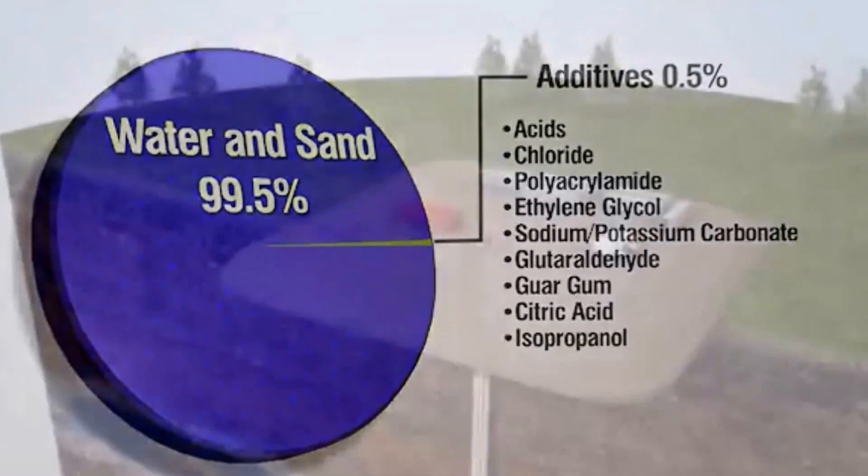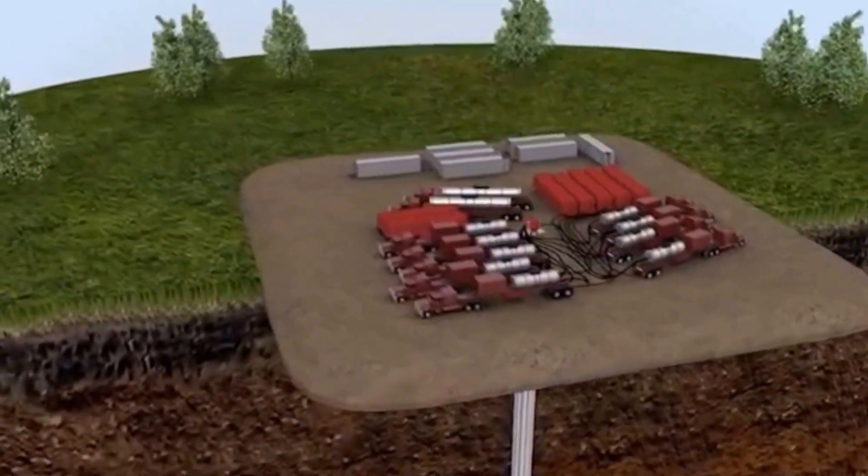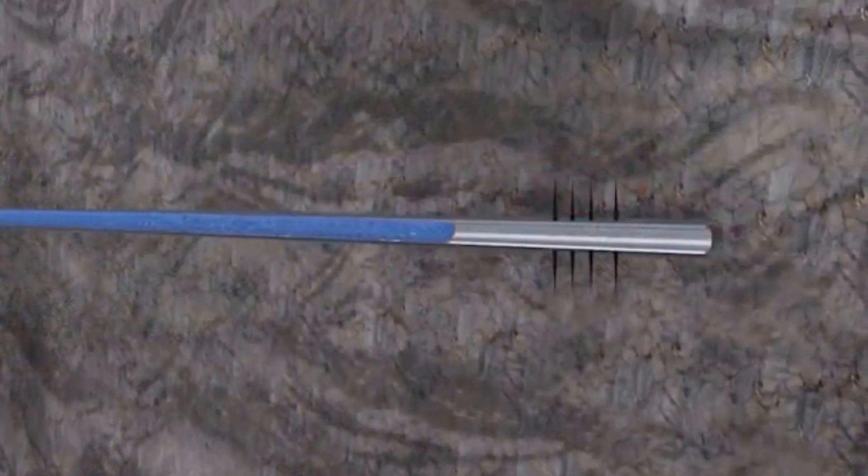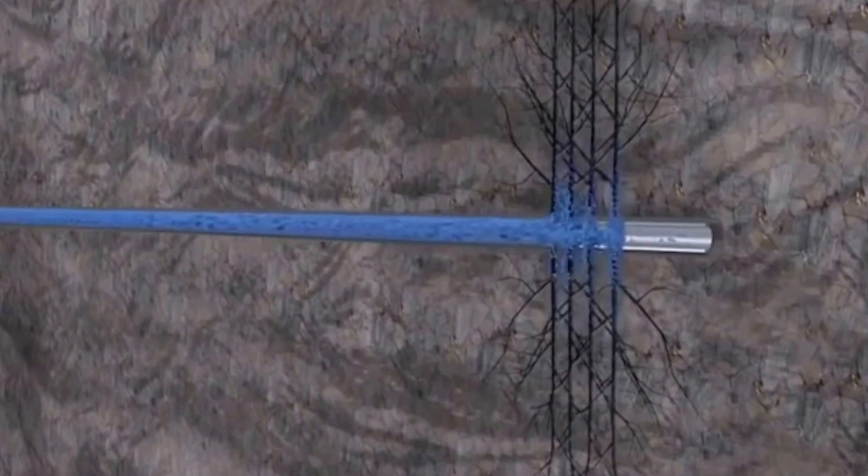This stimulation fluid is sent to trucks that pump the fluid into the wellbore and out through the perforations that were noted earlier. This process creates fractures in the oil and gas reservoir rock.